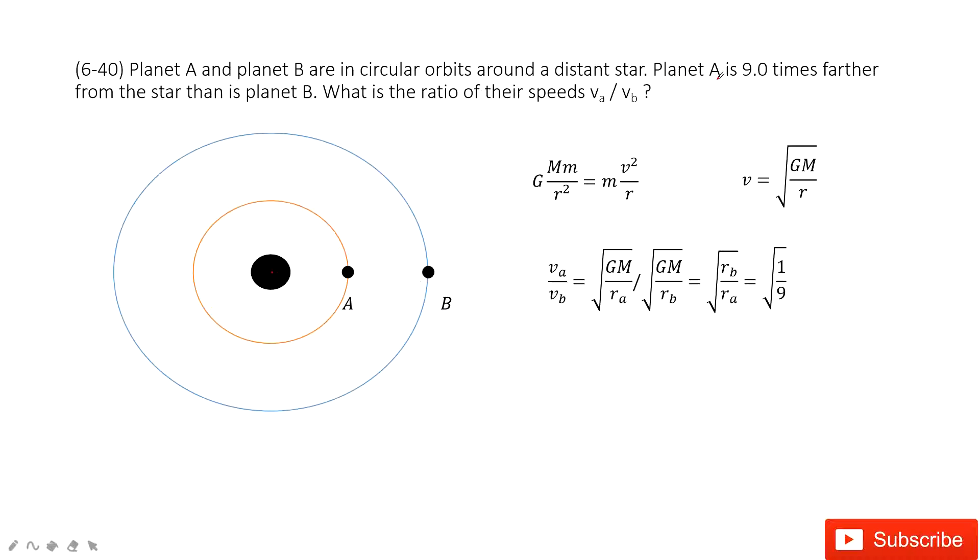It tells you that planet A is 9 times farther away from the star than planet B. So in this one, we know the ratio for the distance rB divided by rA is just 1 over 9, right?